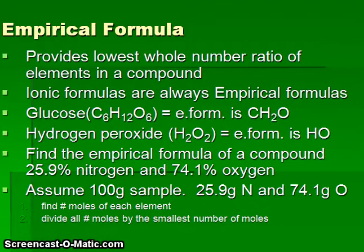For some molecular compounds, like glucose, we can reduce the ratio of carbon, hydrogen, oxygen here, to a ratio of 1, 2, 1. So the empirical formula would be CH2O. Hydrogen peroxide would have an empirical formula of HO.